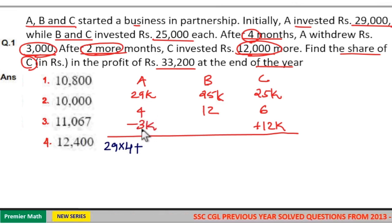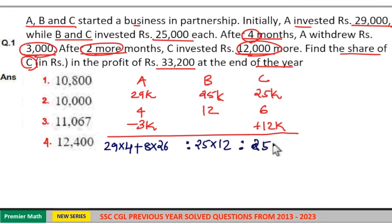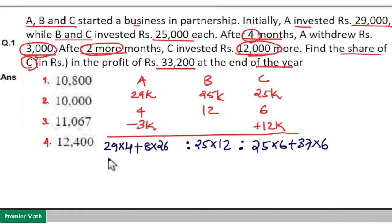So for the remaining 8 months A invested 26,000 and B invested 25,000 for 12 months and C invested 25,000 for 6 months and after 6 months he invested 12,000 more which means for the remaining 6 months he invested 25 plus 12, 37,000 for 6 months. Now ratio is equal to if I take 4 months.